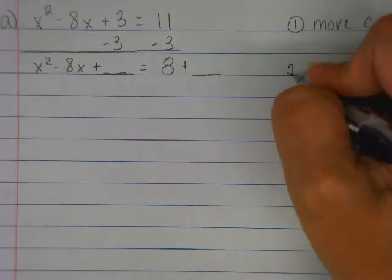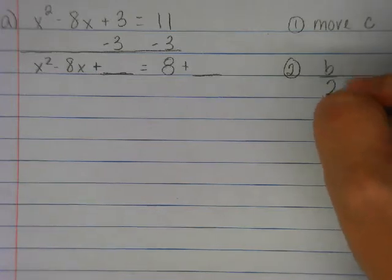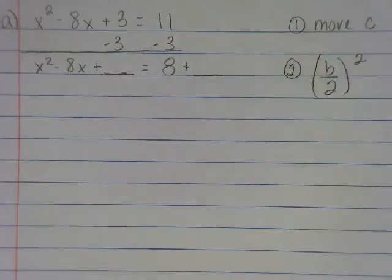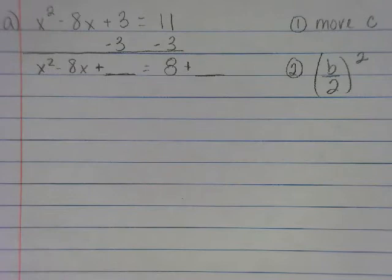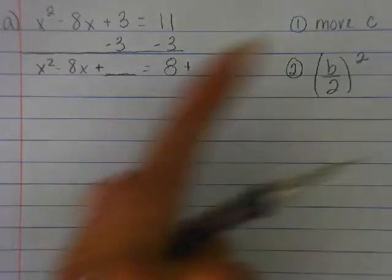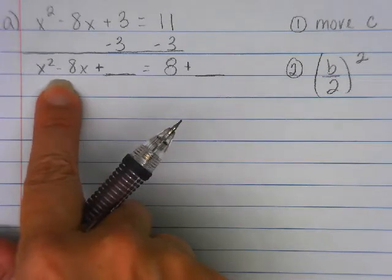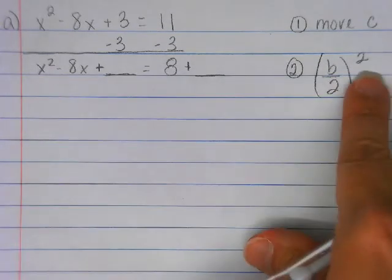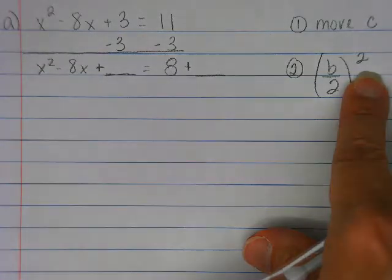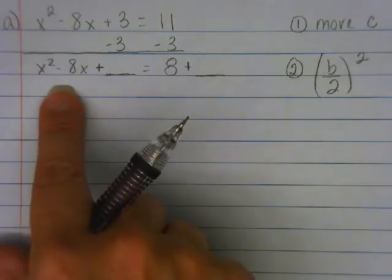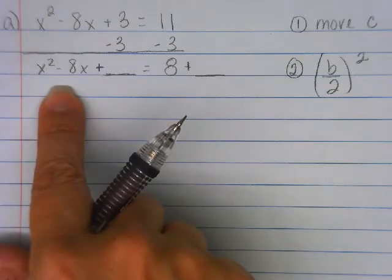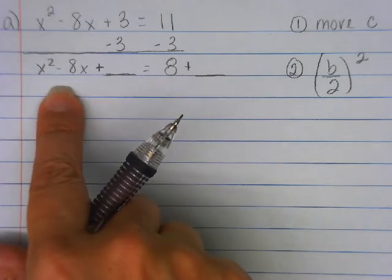Step two, B divided by two quantity squared. Well, what's B? So here's the, it's a negative eight on this. Sometimes it's a positive. The sign doesn't matter because you're going to end up squaring it. And when you square a negative, you get a positive. So if you want to deal with your negative, that's fine. You don't have to.